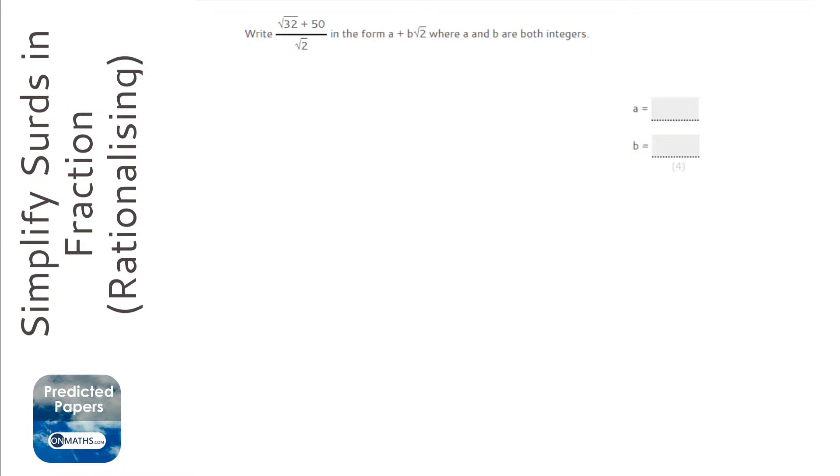So we need to write a surd fraction as just an expression, and whenever we are doing that we are rationalising the surd. Now, rationalising just means getting rid of the surd from the bottom.